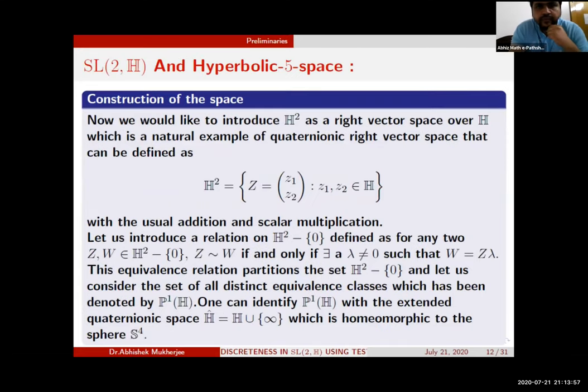Let me briefly describe this space. I introduce H² as a right vector space over the ring of quaternions H, which is a natural example of quaternion right vector space. Let us introduce a relation on the set H² minus 0 defined as: for any two vectors Z, W, these are equivalent if and only if there exists a non-zero scalar such that W can be expressed as Z lambda.